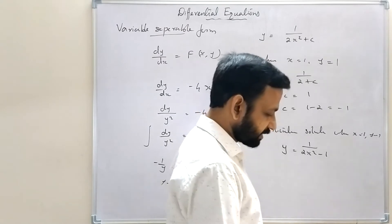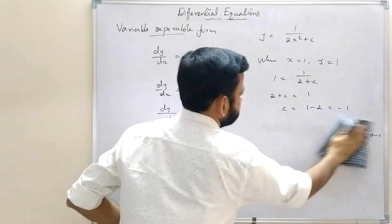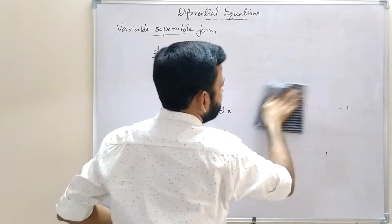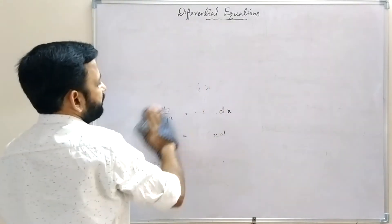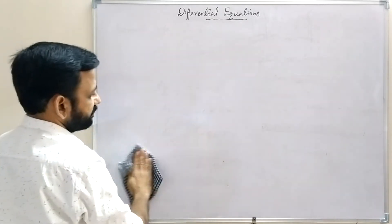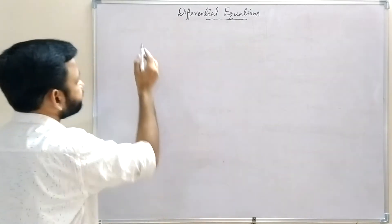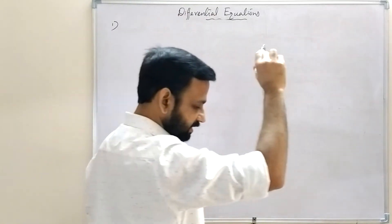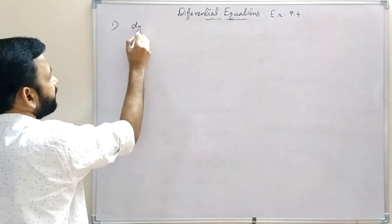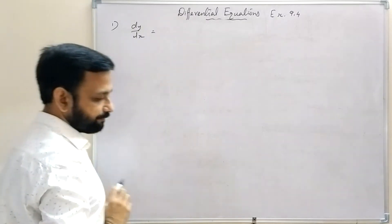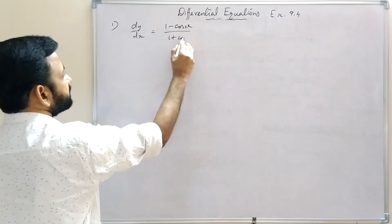Now we will do Exercise 9.4. Integration needs to be done properly to solve these differential equations. Question number 1: dy/dx = (1 - cos x)/(1 + cos x).